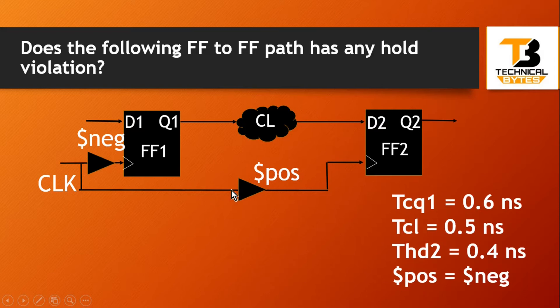SPOS is the positive skew, SNEG is the negative skew. I have not given any numeric value to both of these delays. Instead, I have given you that positive skew equals negative skew. Now you have to tell me, will there be any hold violation or not? Otherwise, I will reveal its answer.